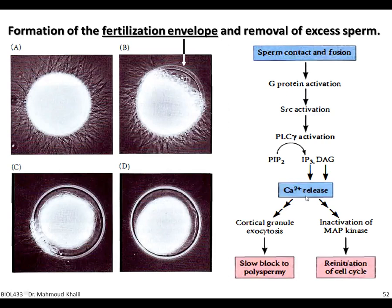Why is calcium so important in fertilization? Calcium triggers cortical granule exocytosis, leading to the slow block of polyspermy. It also inactivates MAP kinase, whose function includes stopping the cell cycle, so once inactivated, the cell cycle initiates. This is necessary because the fertilized egg needs to undergo successive divisions known as cleavage to increase in cell number.